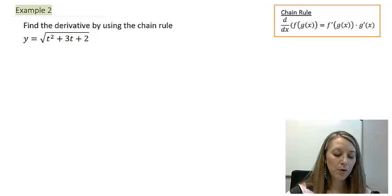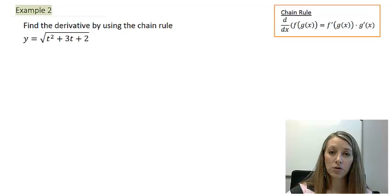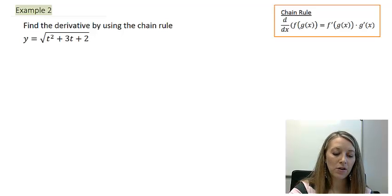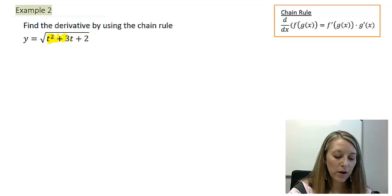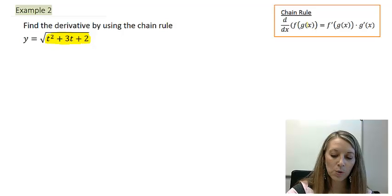My next example is y equals the square root of t squared plus 3t plus 2. Hopefully you can clearly identify your inside and your outside function. I always like to pick the inside one first — it's usually easier to see. That is t squared plus 3t plus 2, so that's my inside function, identified with g in my rule.